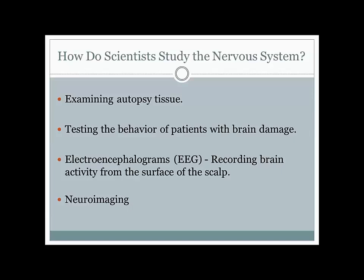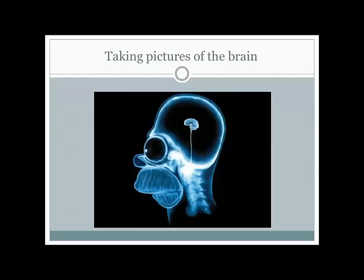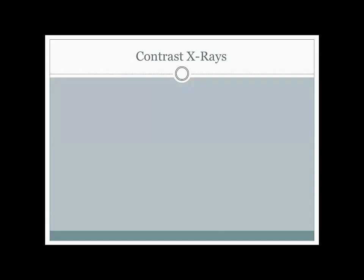Primarily what we're looking at when we talk about neuroimaging is pictures of the brain—we want to be able to see the brain in action as much as possible. One of the first ways we're able to do this is through the use of contrast x-rays, a method to look at the structure of different components of the brain.